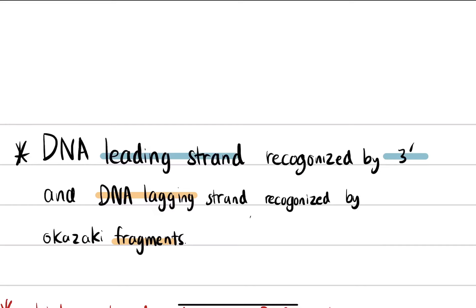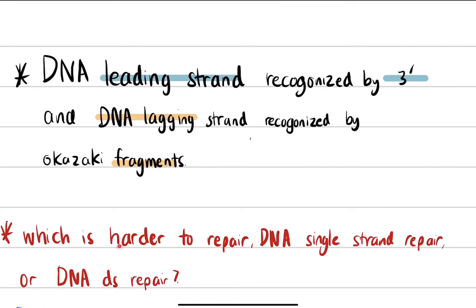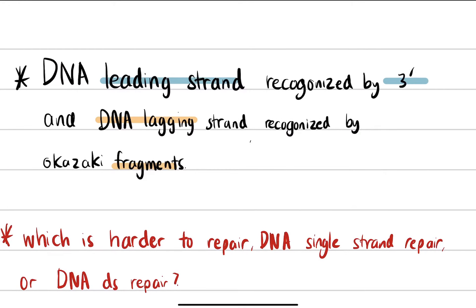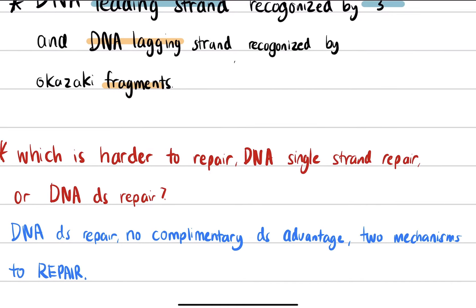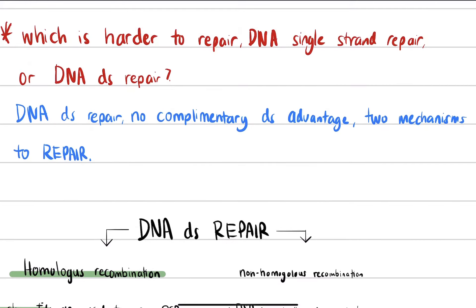Which is harder to repair — a DNA single strand break or a double strand break? A single strand break is not that bad because of complementary base pairing. If an adenine is missing on a double strand, the body recognizes the thymine and knows the complement must be an adenine. So single strand breaks are relatively straightforward to repair.